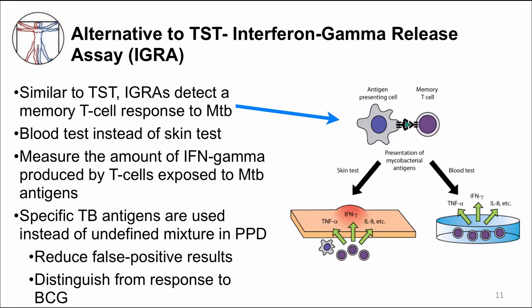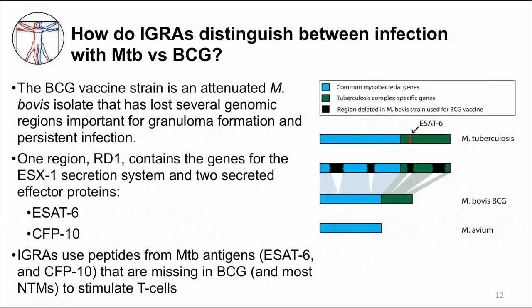The fact that we can choose specific TB antigens means that there are important differences between pathogenic and non-pathogenic mycobacteria. BCG vaccine is composed of an attenuated Mycobacterium bovis isolate. When researchers were trying to figure out why this M. bovis isolate was attenuated, they compared its genome to the parental virulent M. bovis and to M. tuberculosis. They found several regions of the genome that were lost in the attenuated M. bovis BCG isolate. One region called RD1 contains the genes for a secretion system and its secreted effector proteins that are important for granuloma formation. IGRAs use peptides from these two MTB proteins.